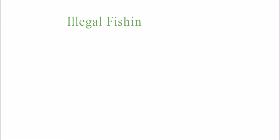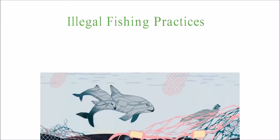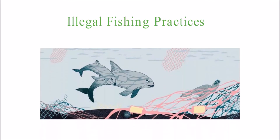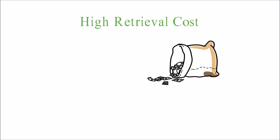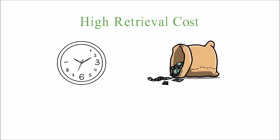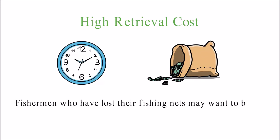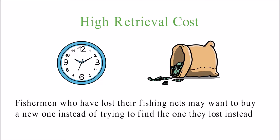Illegal fishing practices: people who fish illegally may throw their nets into the sea when caught by authorities. High retrieval cost: retrieving ghost nets from the ocean takes a lot of money, time, and involves risk. Fishermen who have lost their nets may prefer to buy new ones rather than attempt to find the ones they lost.